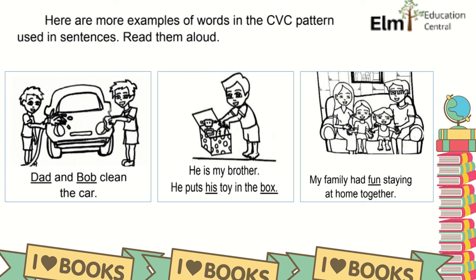Here are examples of words in CVC pattern used in sentences. Read them aloud. The first image: Doug and Bob clean the car. He is my brother. He puts his toy in the box. And last image: My family had fun staying at home together.